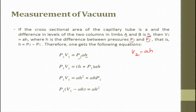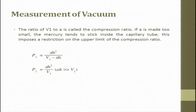Re-altering the equations, P1V1 = (H + P1) × AH, which gives AH² + AH·P1. Moving P1 to one side: P1(V1 − AH) = AH². The ratio of V1 to A is called the compression ratio. If A is made too small, the mercury tends to stick inside the capillary tube, which imposes a restriction on the upper limit of the compression ratio.